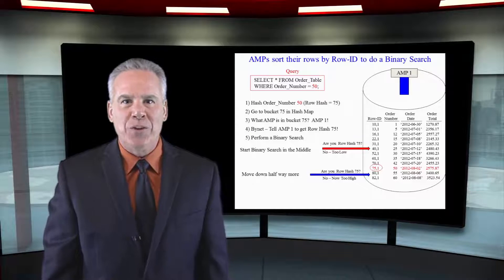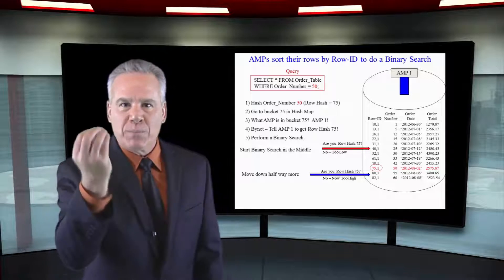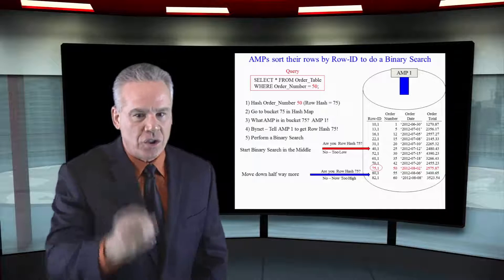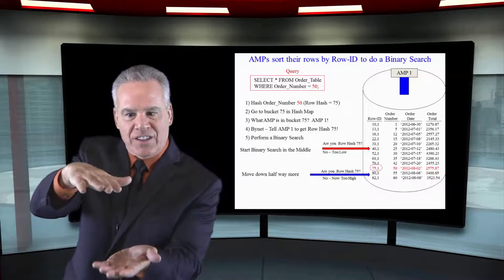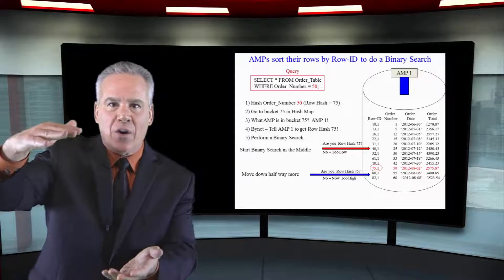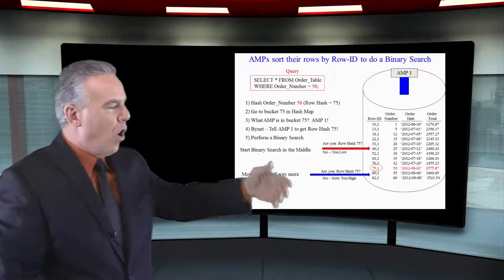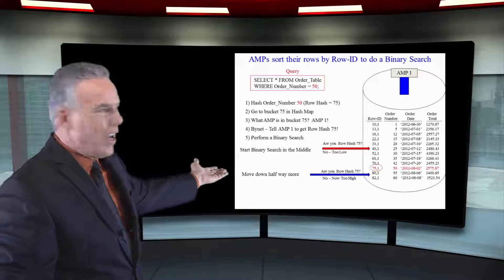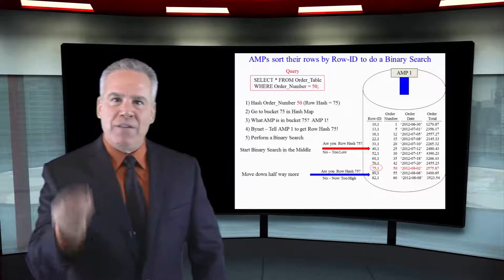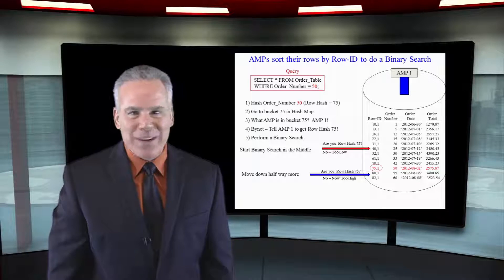It says look it up like you would a phone book. We're going after this particular row hash. Go to the middle of the block. Is that it? That's too low. Go higher. That's too high. And that's called a binary search. They can do this and find that note in three lookups.